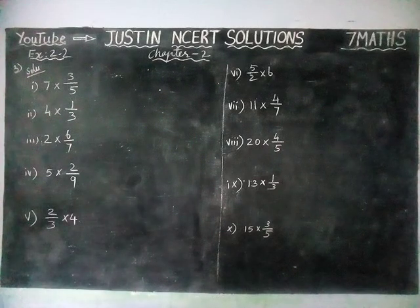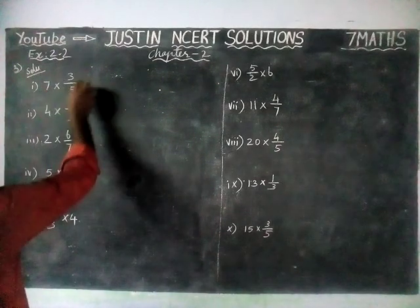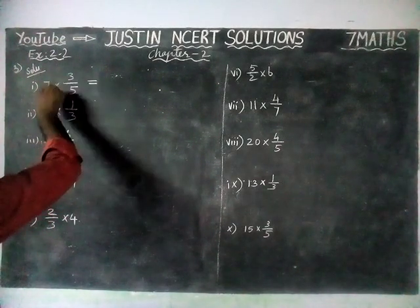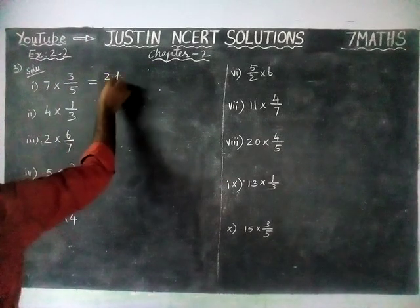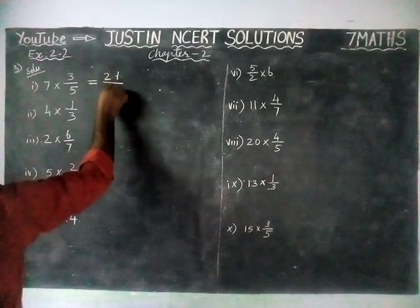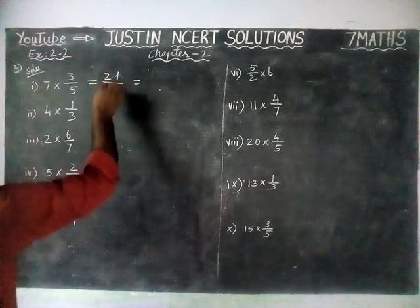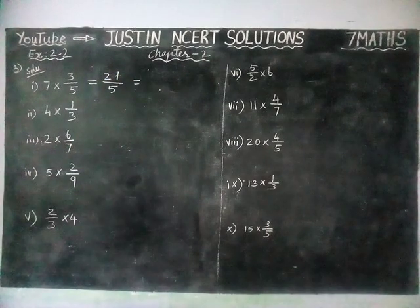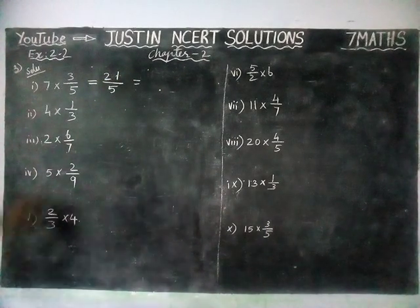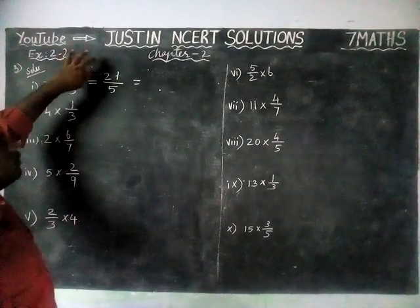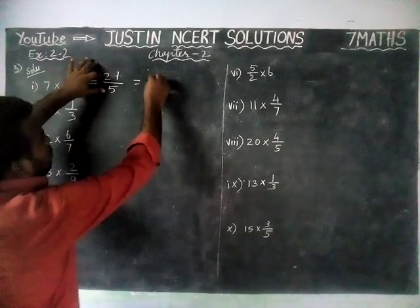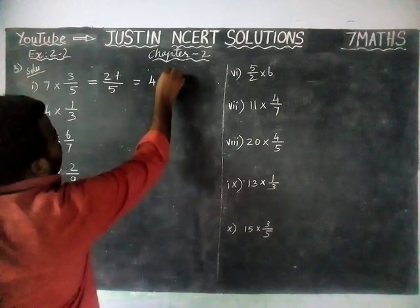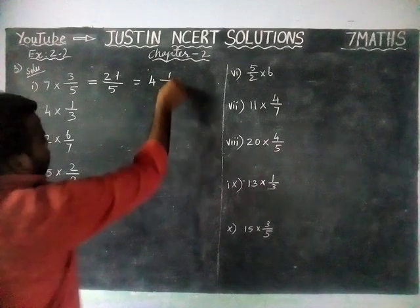First question: 7 into 3 by 5. Here a whole number is there, so we multiply: 7 threes are 21, divided by 5. So 21 divided by 5 is an improper fraction. We convert it into a mixed fraction. In 21, there are 4 fives — 4 fives are 20, remaining 1. So the answer is 4 and 1 by 5.